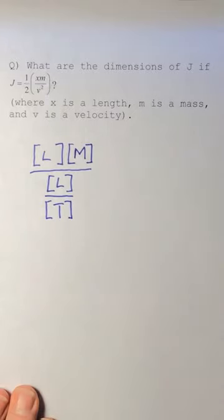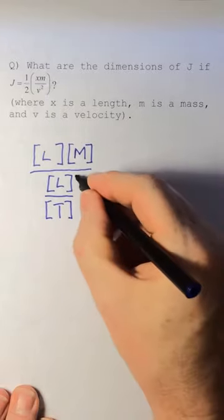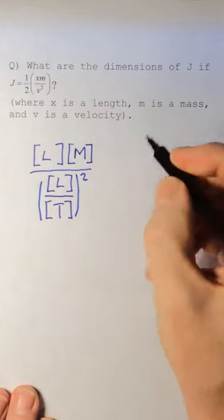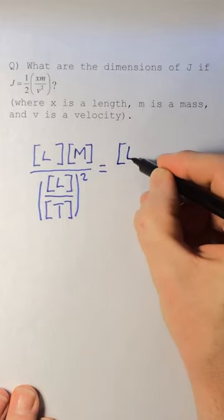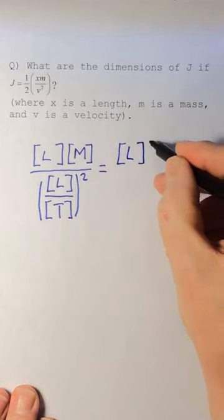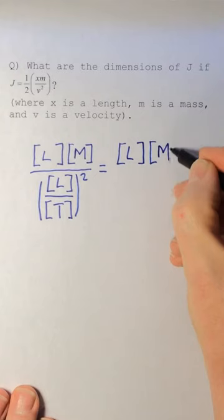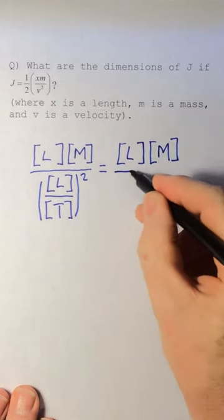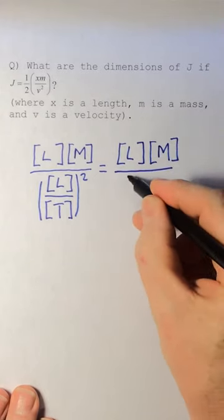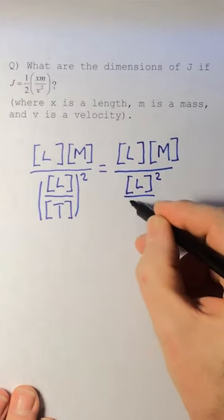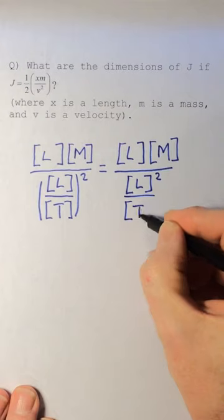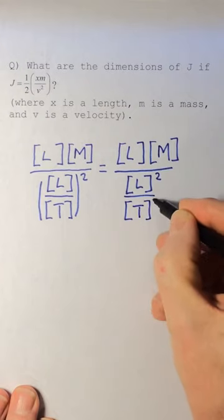So now we have one of these and that's squared, so we're going to do that squared. So let's expand this, so this would be L M over L over T squared. One of the common mistakes is people forget that they have to square both the top and the bottom when a fraction is squared.